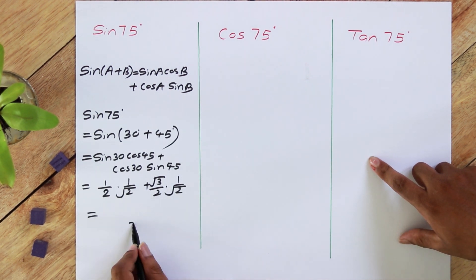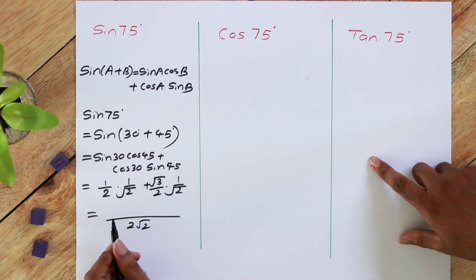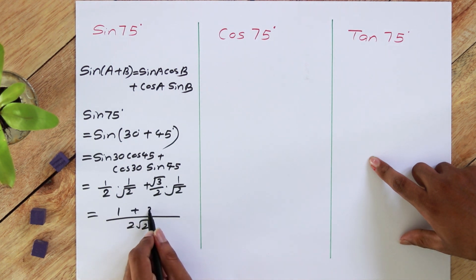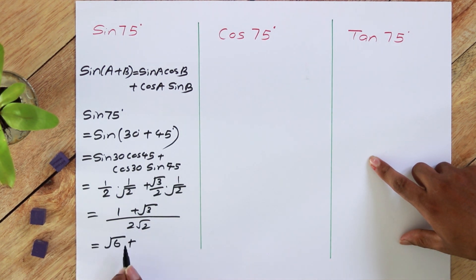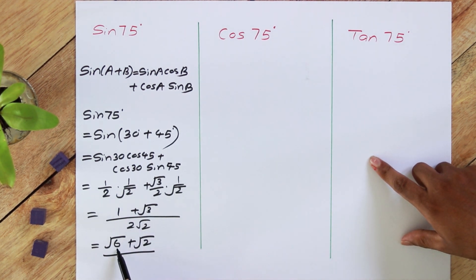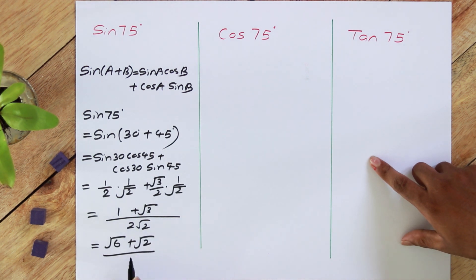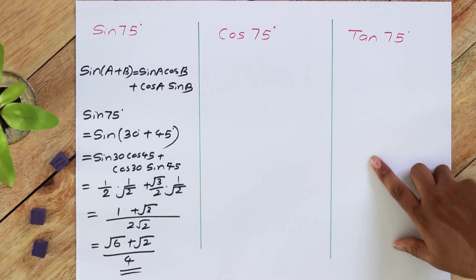So this gives us a denominator of 2 root 2, and above we have root 3 plus 1. When you rationalize the denominator by multiplying by root 2 over root 2, you get root 6 plus root 2 over 4. This will be the answer for sin 75.